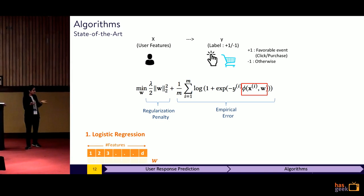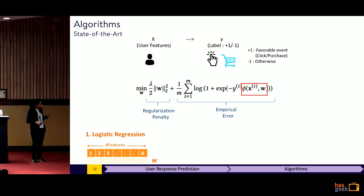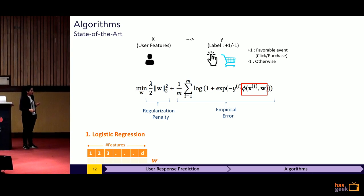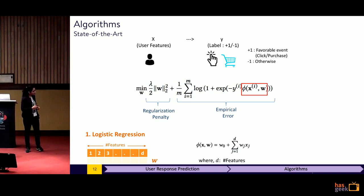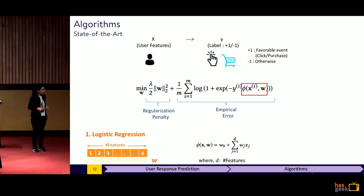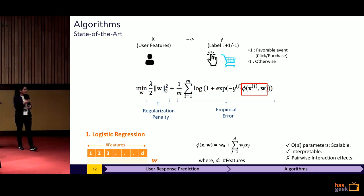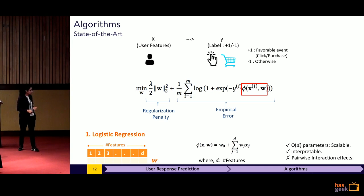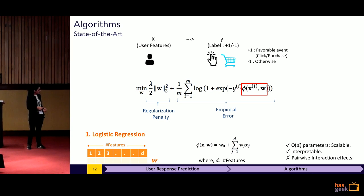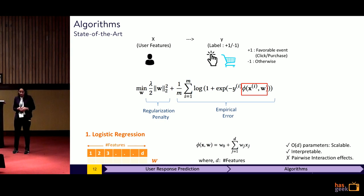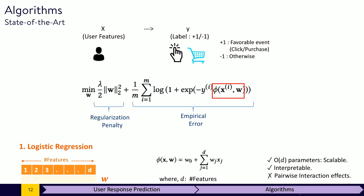Let's start with logistic regression. This is a classical, very famous algorithm. It learns a vector W of length D, where D is the number of features. The phi function it defines is just linear interactions of these features, weighted by the vector W we are trying to learn. This is very scalable because the number of parameters is order D. It is also very interpretable — to understand how important a feature is, just look at its corresponding value in the W vector. The problem with logistic regression is that it does not capture pairwise interaction effects. For example, if a certain category is only browsed on mobile and never on desktop, this sort of pairwise feature interaction will never be captured.